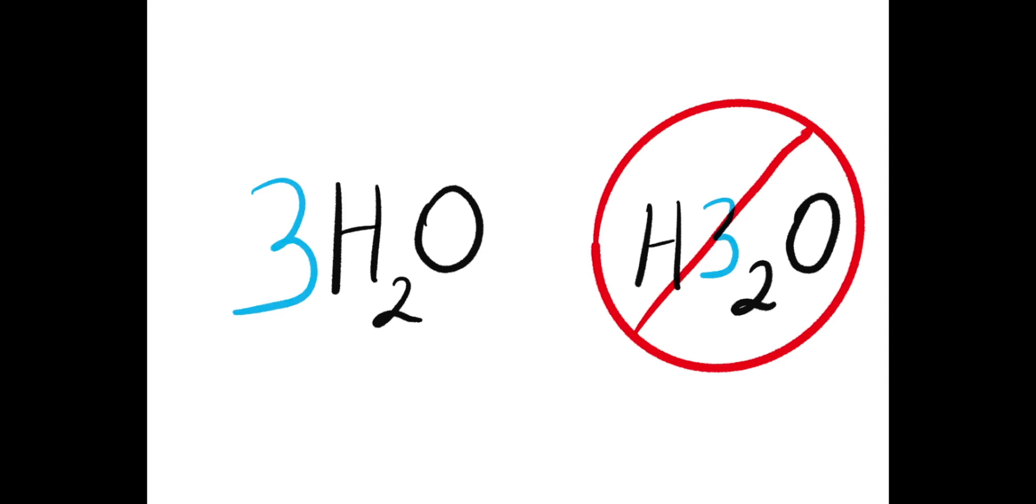Because of this, if you put a coefficient in front of a compound, it is going to affect all the elements within that compound. This means you may have to adjust some stuff on your chart. You will continue plugging in coefficients into the equations until all the elements on both product and reactant sides are equal. Once this happens, you have successfully balanced the equation.